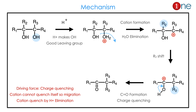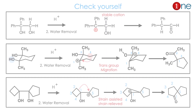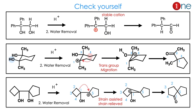Then migration of R2 happens. The driving force for R2 migration is carbocation quenching. Carbocation quenching gives the ketone, because the tertiary carbocation cannot be quenched by itself. So the final product is the ketone.